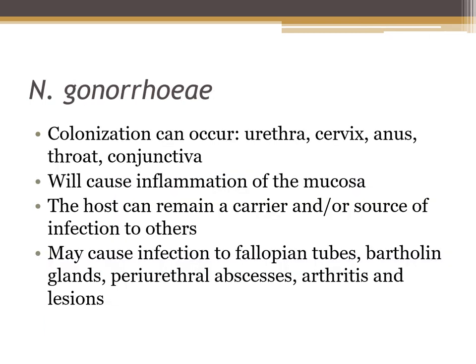Neisseria gonorrhoeae is a pathogen that can colonize the urethra, cervix, anus, throat, and conjunctiva. It can colonize a mother's vagina or cervix and be passed to the baby during birth, entering the baby's eyes through the birth canal and potentially leading to neonatal blindness. It causes inflammation of the mucosa, and the host can remain a carrier. This may lead to infections of the fallopian tubes, the Bartholin glands, periurethral abscesses, arthritis, and lesions.